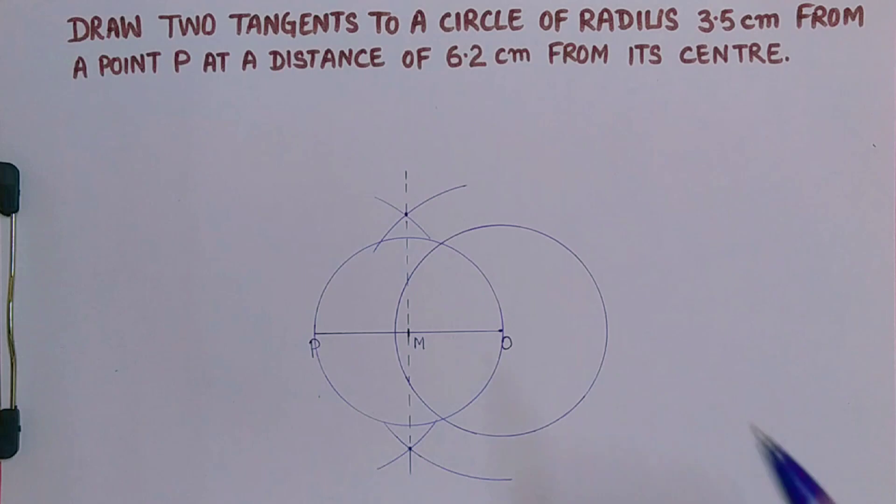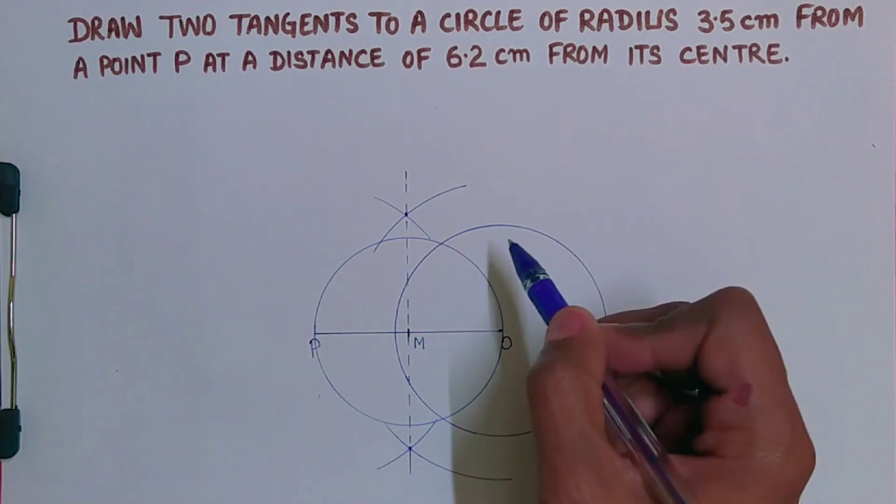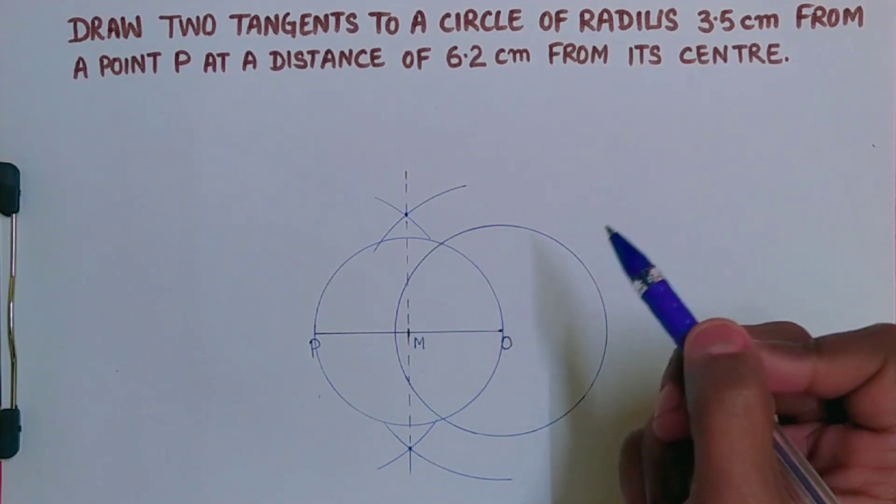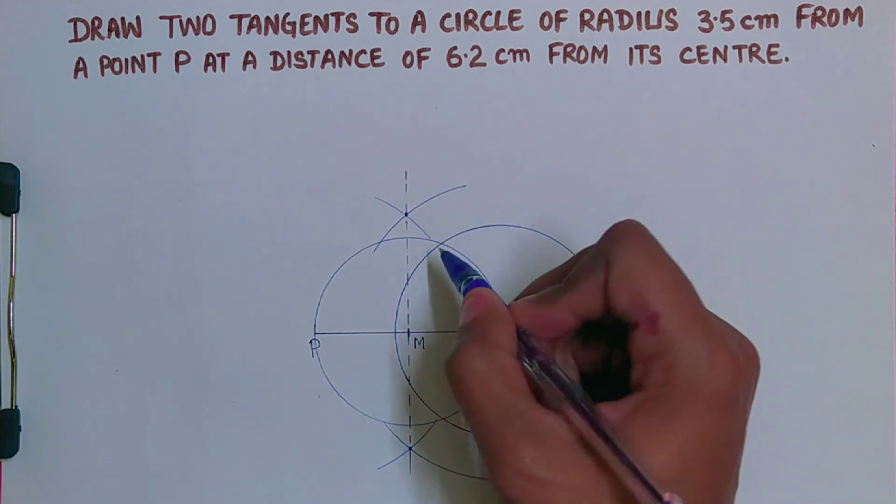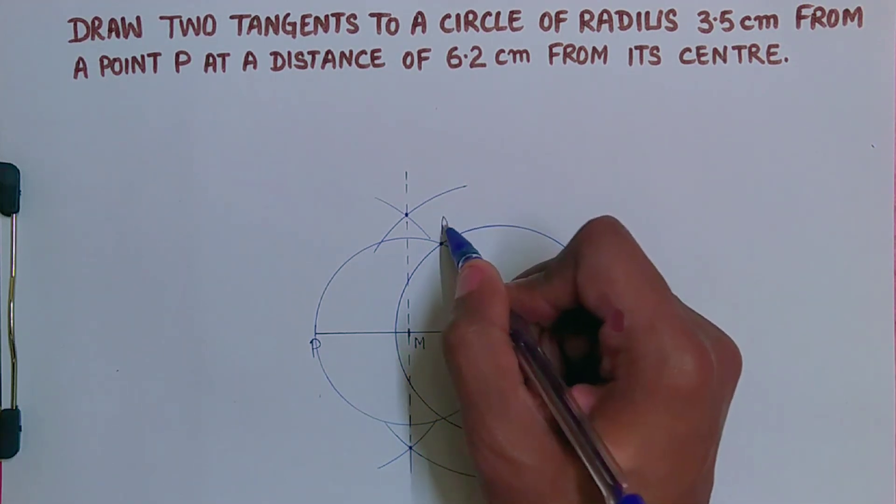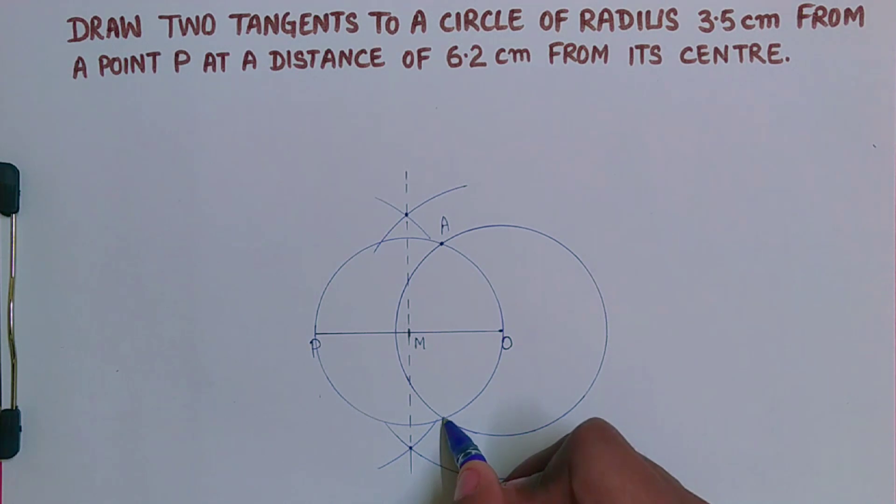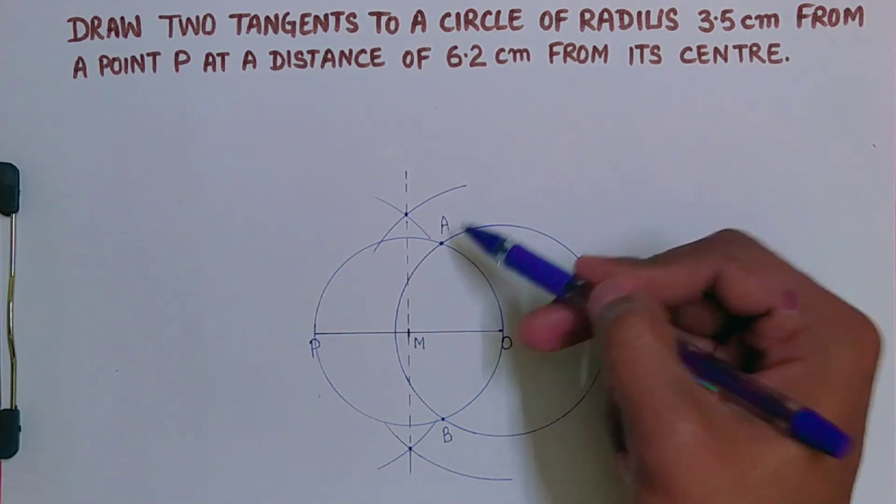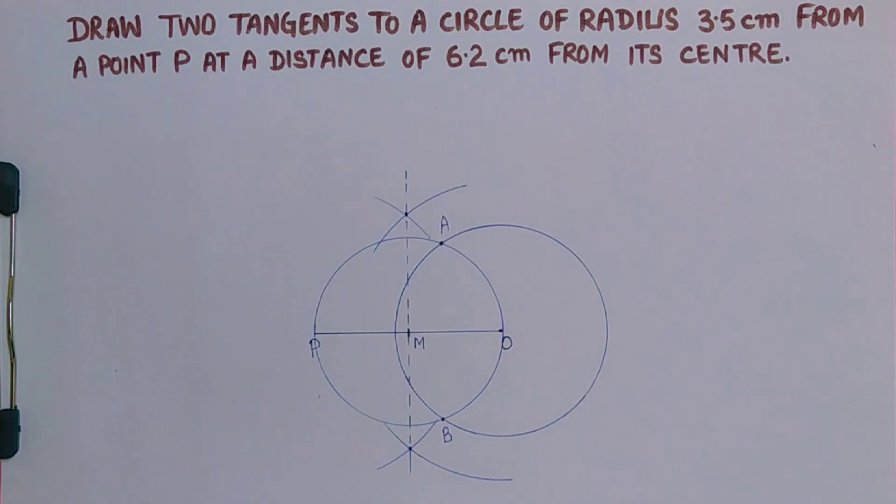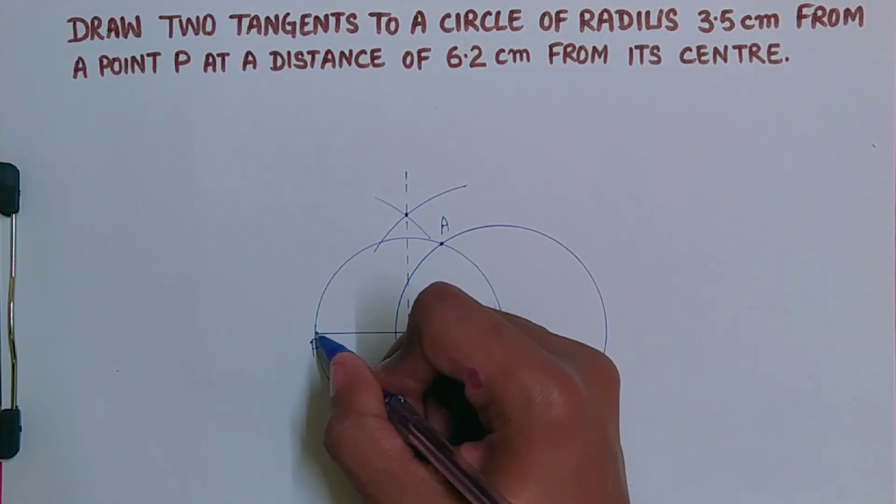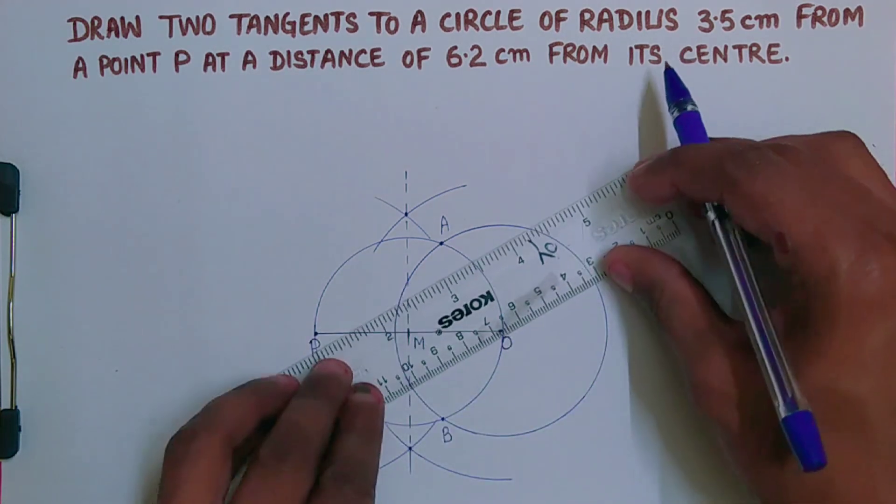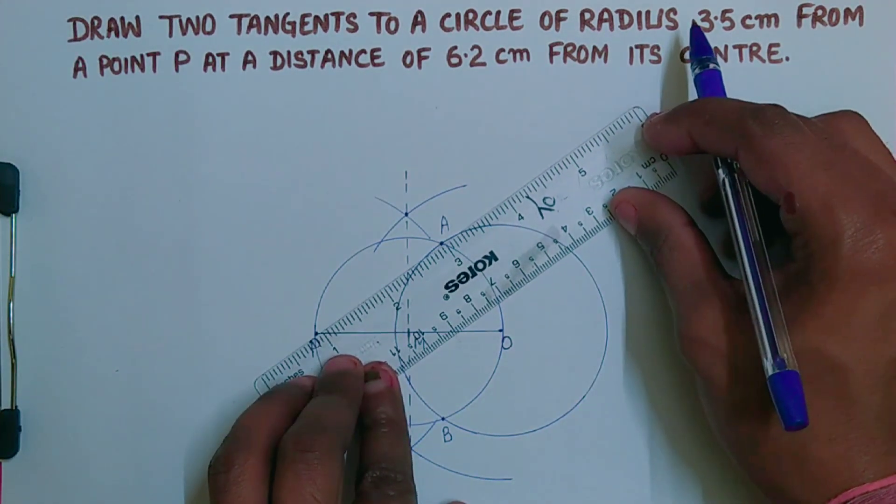Wherever this circle cuts the previous circle, that point you mark as A and B. We got these two points, this point is A, this point is B. Now PA and PB, these two points we will join.